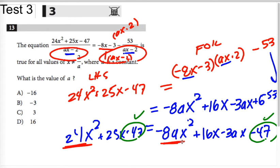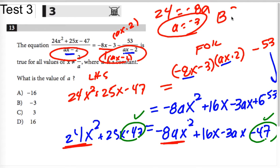So 24x squared has to be negative 8ax. So 24 is negative 8a. That confirms to me that my a is negative 3. So I'm pretty sure it's B.